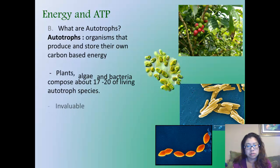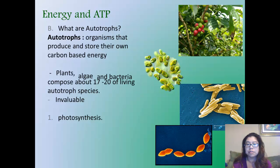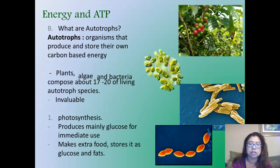Autotrophs are invaluable, which means they're very important. In photosynthesis, what they do is they mainly produce glucose that is mainly used by the plant. If they don't use it right away, they can store it as extra food as glucose and fats. That is why for plant cells, they have an extra organelle called vacuoles that make that starch.